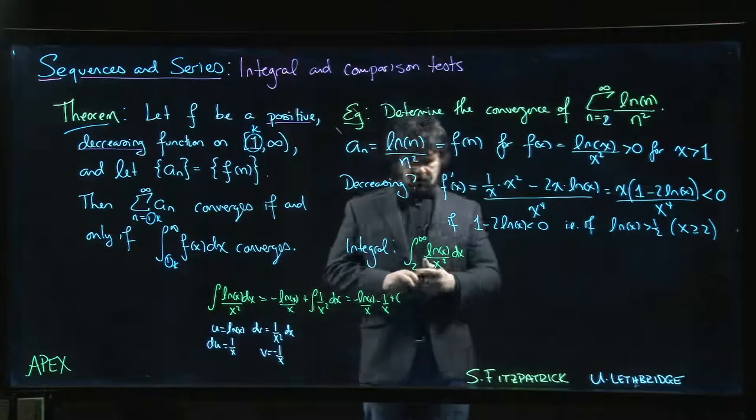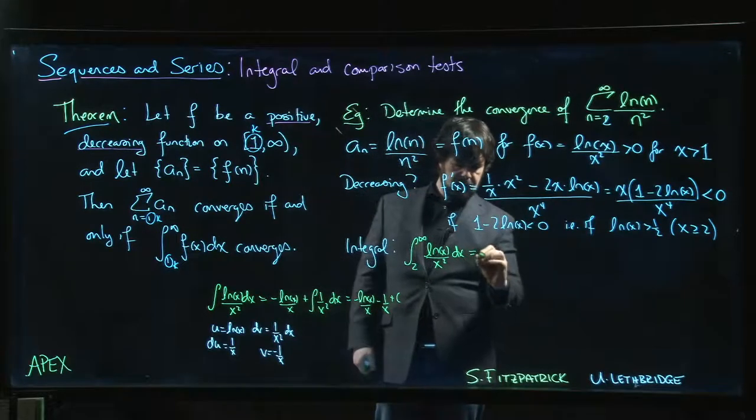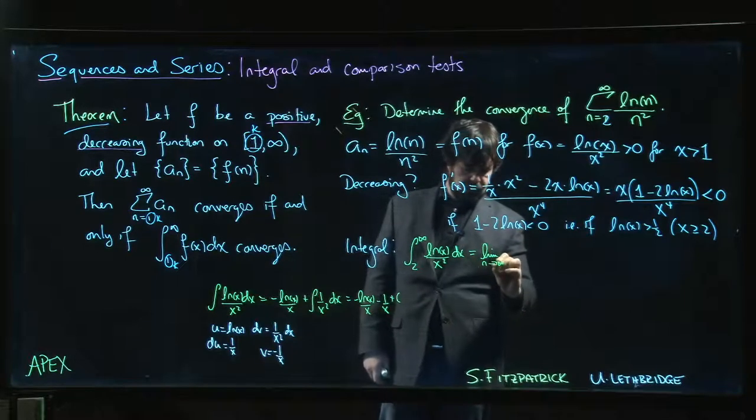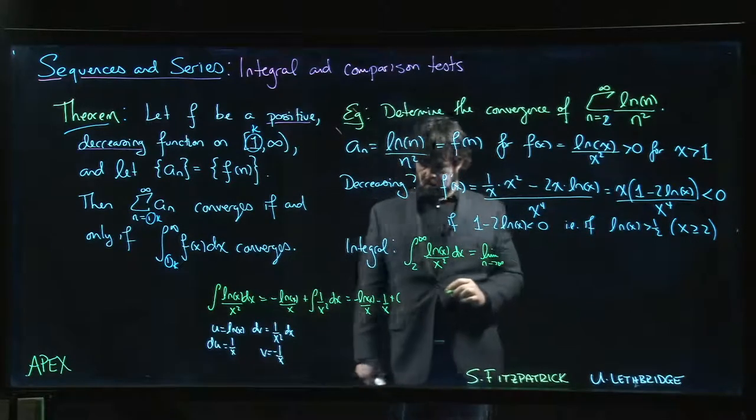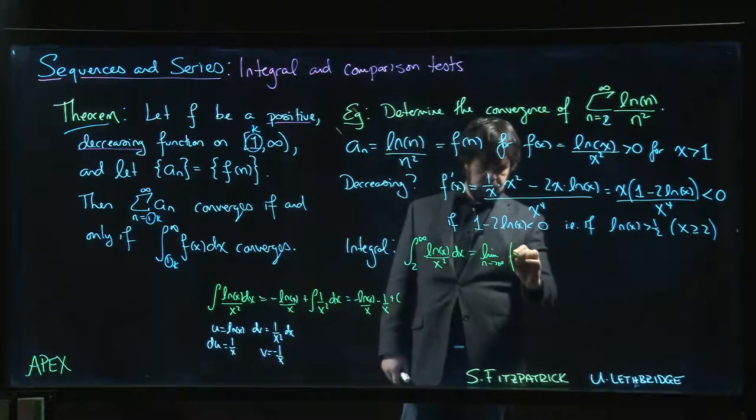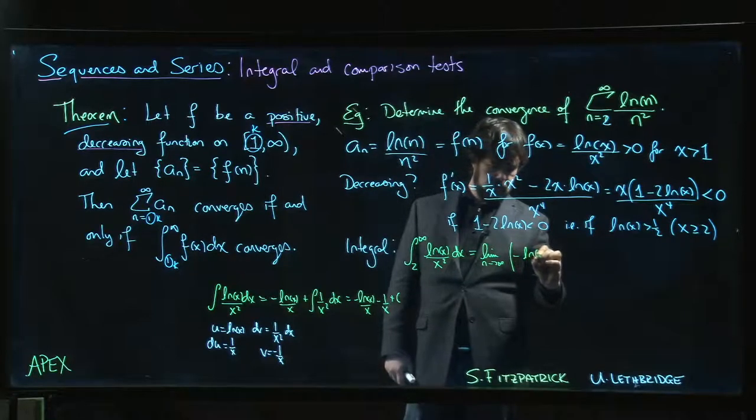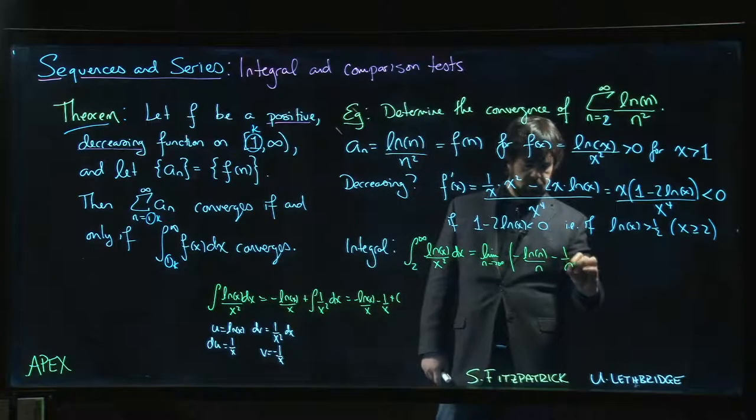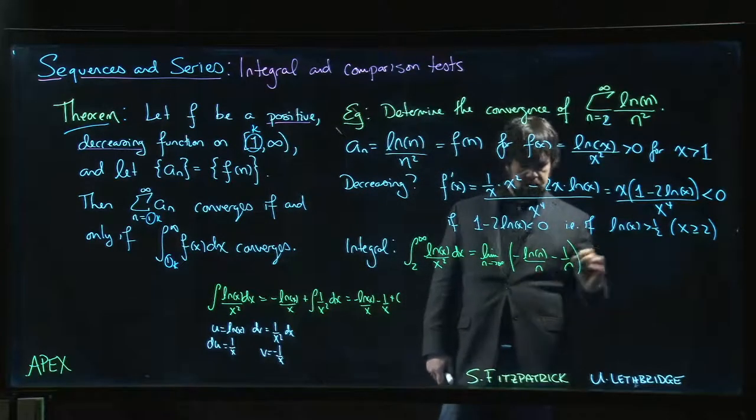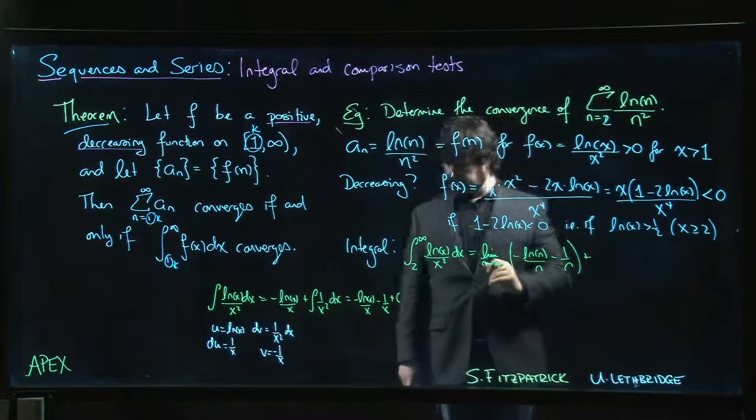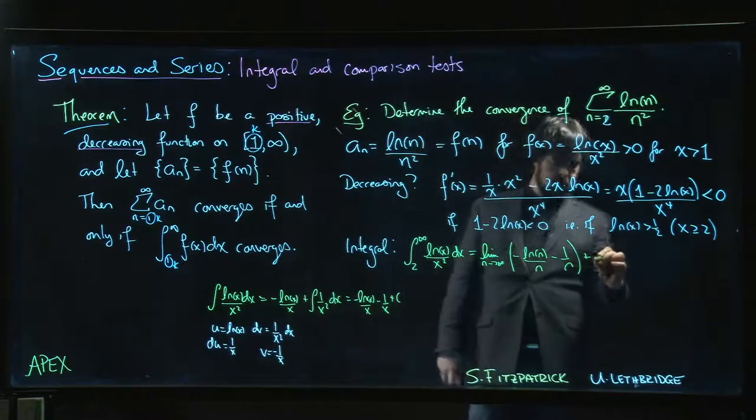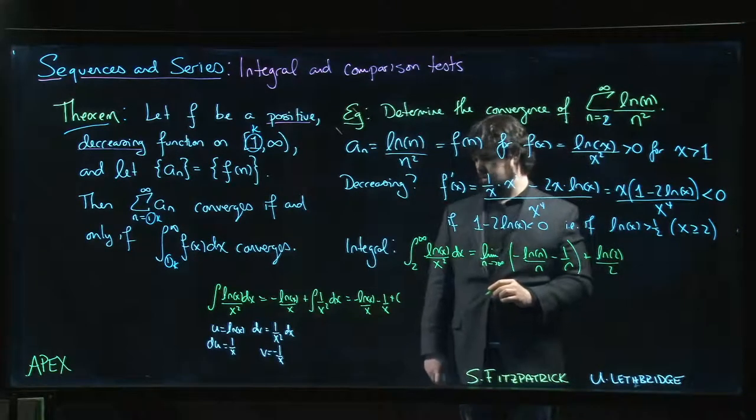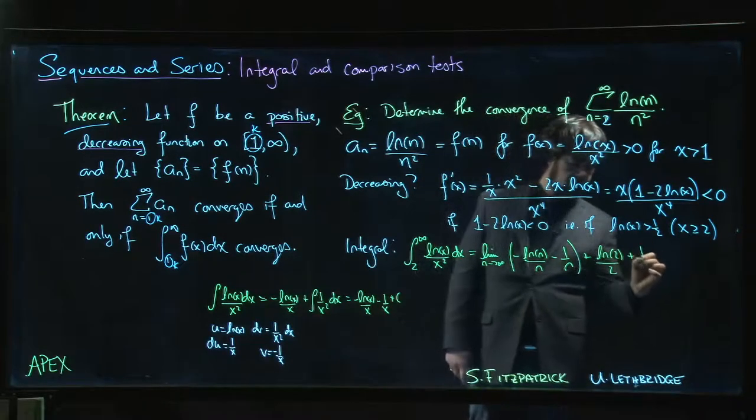So that means that this integral will be, it'll be the limit as n goes to infinity of minus log n over n minus 1 over n. That's the upper limit. Plug in the lower limit, 2. Log 2 over 2, plus 1 half.